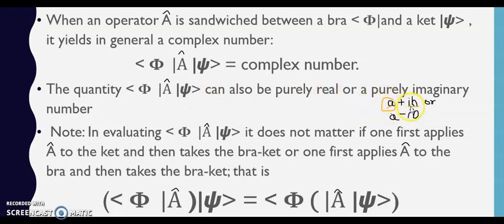If one first applies operator A to the ket and then takes a bracket - that is agar hum pehle isko bra par operate kar dete hain toh bhi hamara wahi value aayega aur isko agar hum phir ket par operate karte hain toh bhi hamara wahi value aayega.